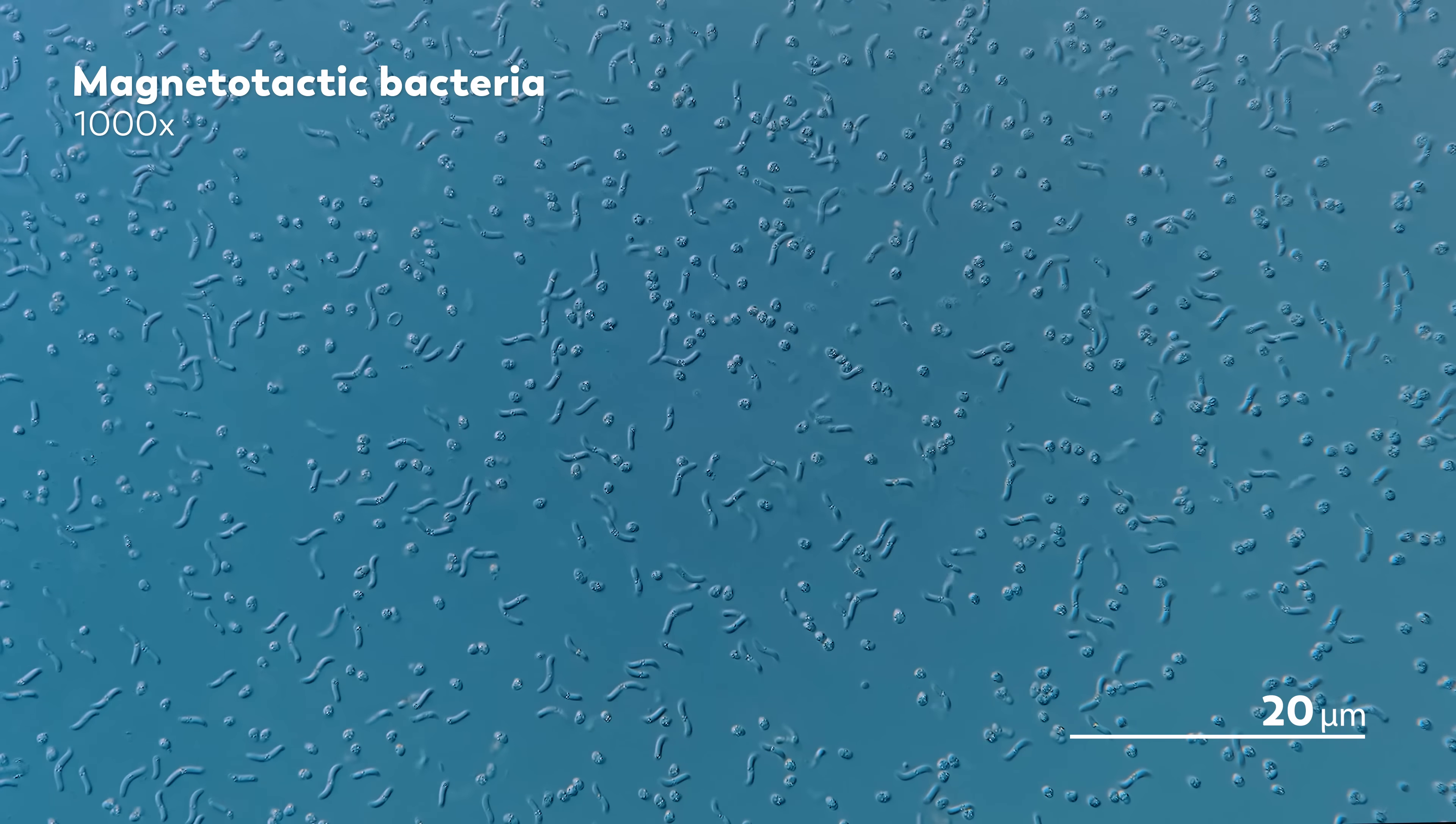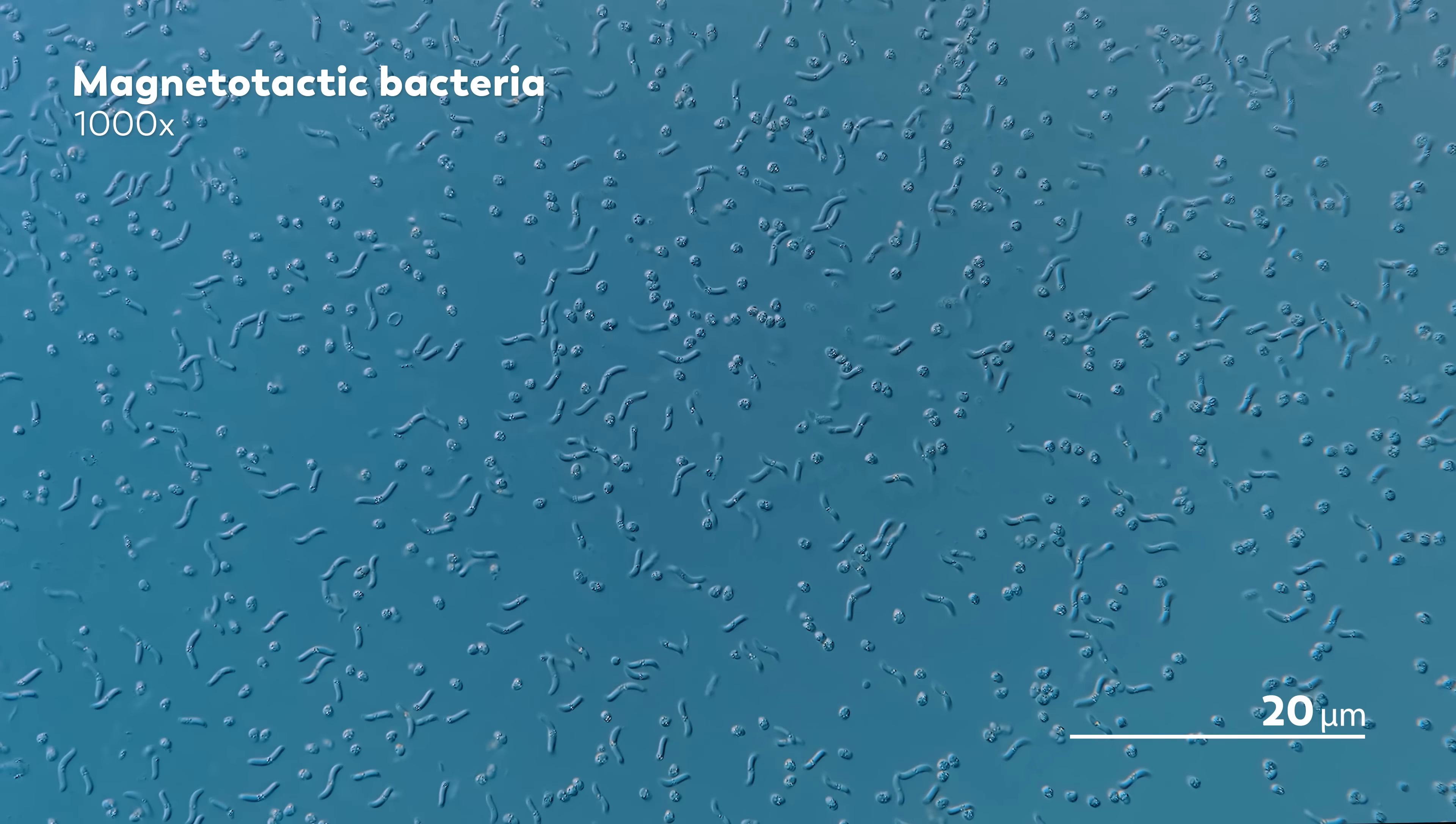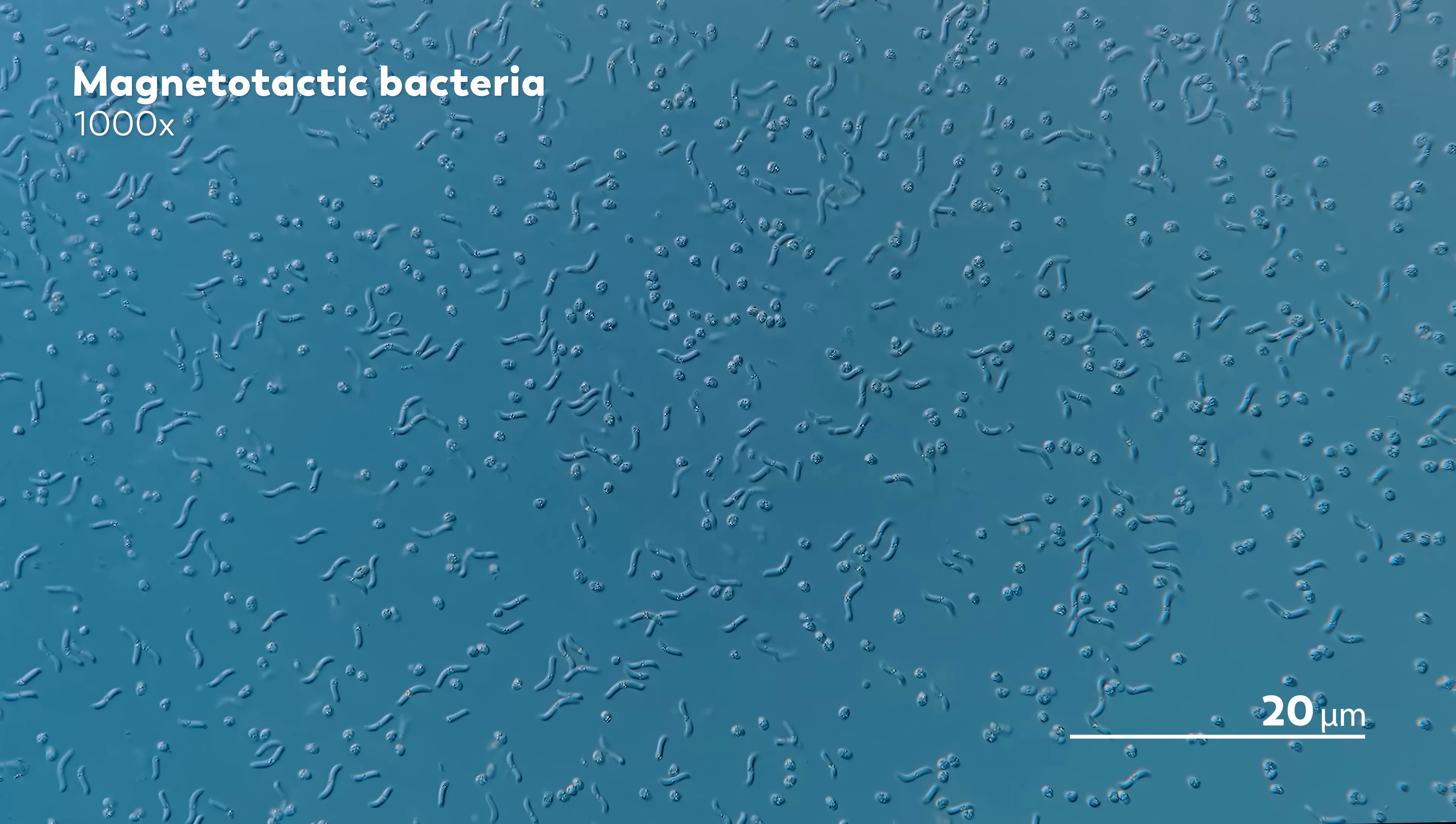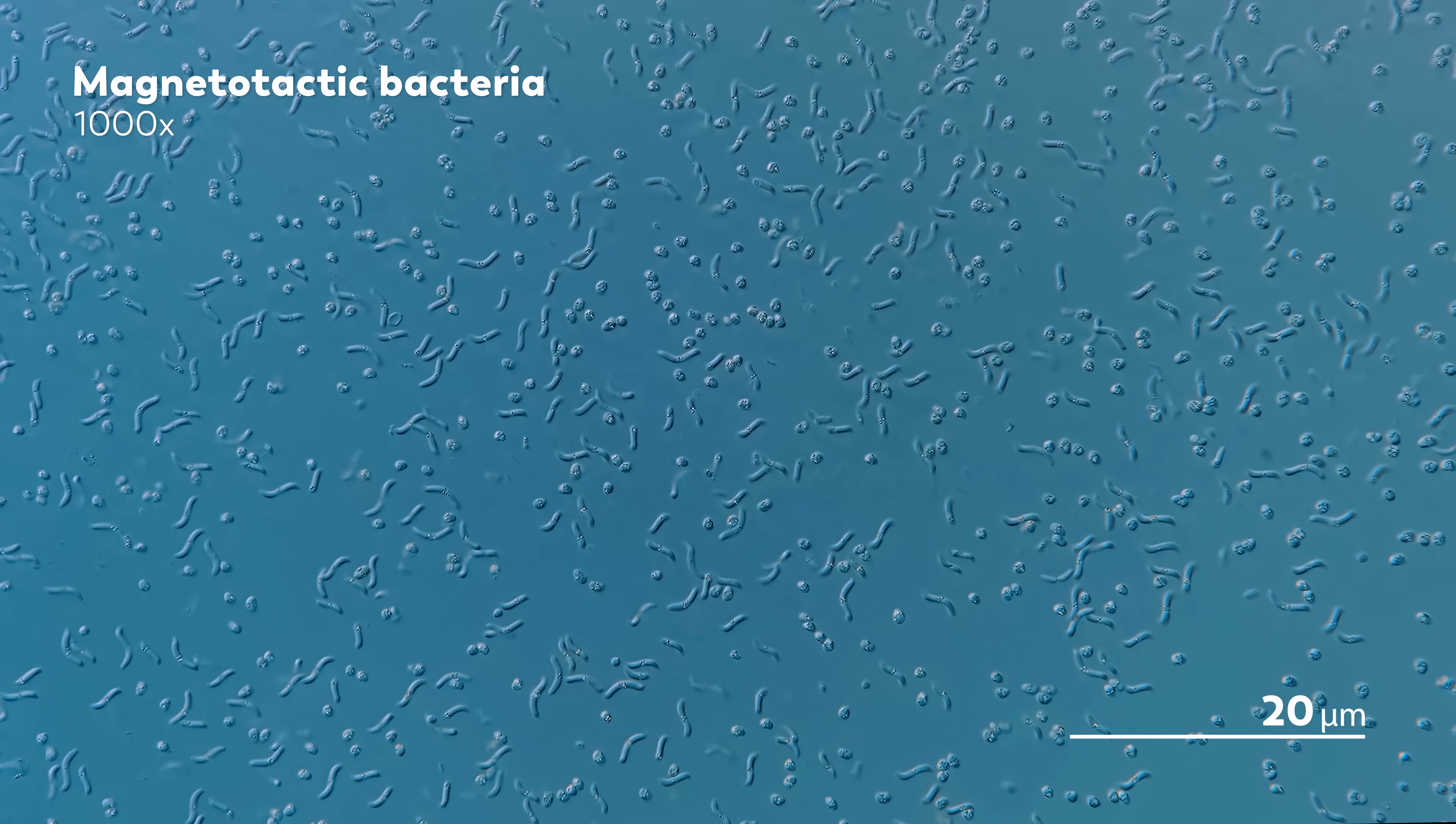Magnetotactic bacteria were first described in 1963 by an Italian scientist named Salvatore Bellini, who found them living in freshwater. And when he saw them move with the same singular northward focus that ours have been exhibiting, he considered the idea that they might have some kind of internal compass within them. But while Bellini wrote up his work, it was only circulated as manuscripts to some of the universities in Italy, instead of being published in a journal for more scientists to find.